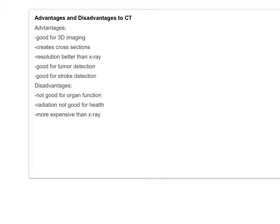CT scans are good for 3D imaging — they give you cross sections so you can see deep into an area. The resolution is much better than for x-rays so you get a lot more detail. You can even detect tumours, which show up as areas of increased density, and stroke detections, where a density increase in certain parts of the circulatory system is visible. However, CT scans don't tell you what's going on with organ function since it's a snapshot, not a film. Radiation is not good for health, and they're more expensive than x-rays.